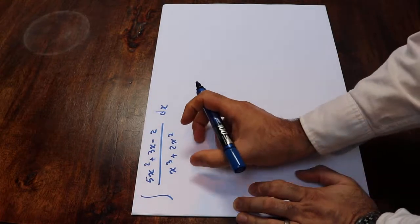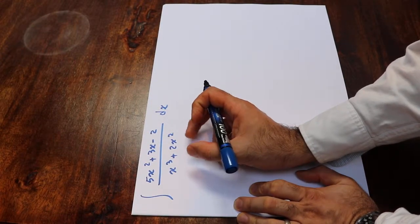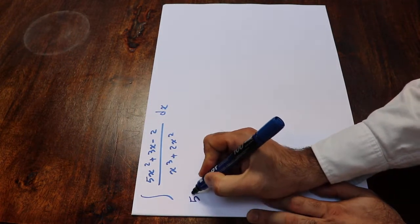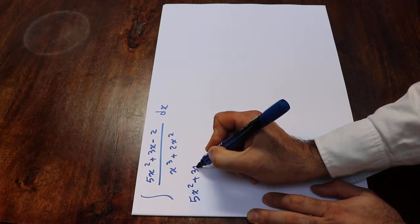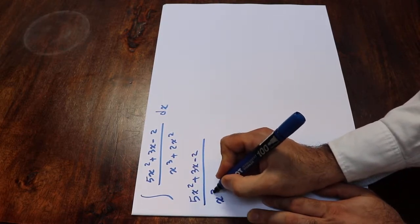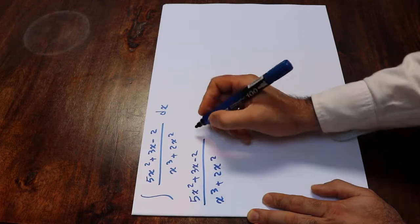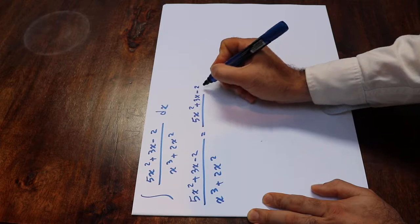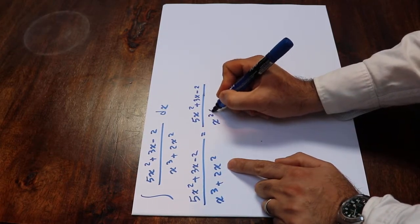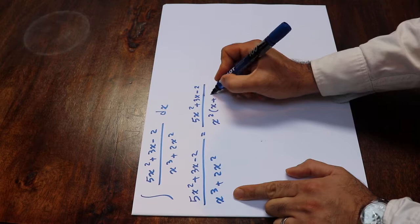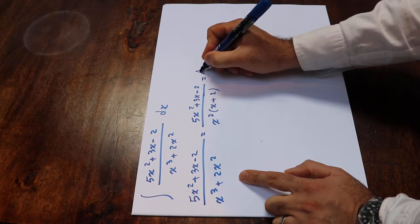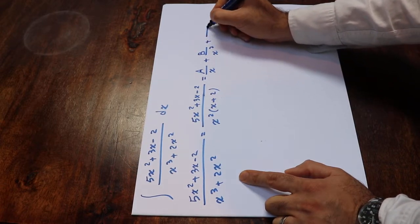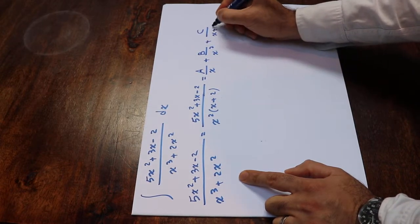To solve this integral, you first have to express this rational function as the sum of partial fractions. So you write (5x² + 3x - 2) divided by (x³ + 2x²), which equals (5x² + 3x - 2) divided by x²(x + 2). This equals A/x + B/x² + C/(x + 2).